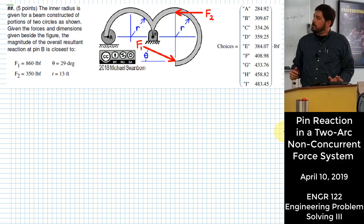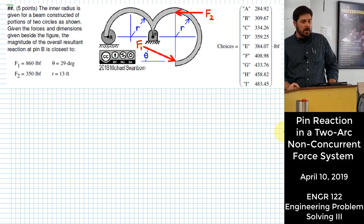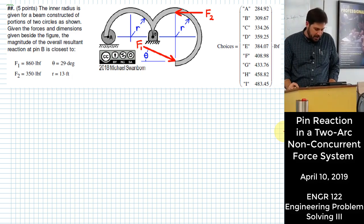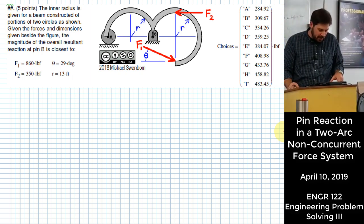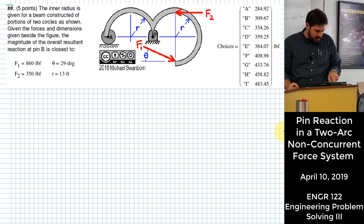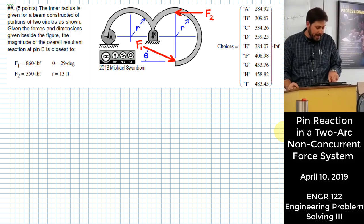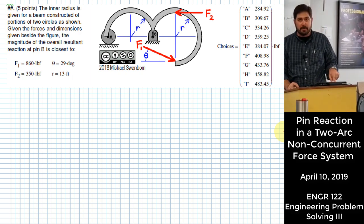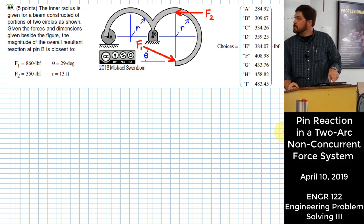All right, so we have this weird-shaped beam, and we want to figure out how much reaction occurs at the overall resultant reaction at pin B for this problem. Where shall we start?